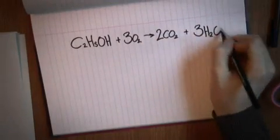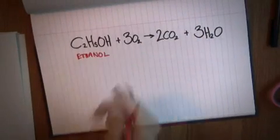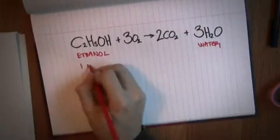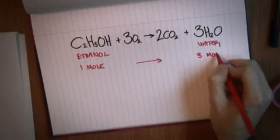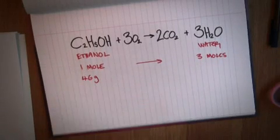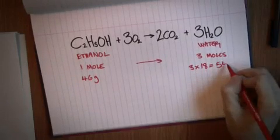We said earlier that a mole of ethanol is 46 grams and burning it gives you 3 moles of water. What's the molar weight of water? It's 16 for the oxygen plus 2 times 1 for the hydrogen, 18 grams per mole. So burning 46 grams of ethanol gives you 3 moles times 18, 54 grams of water.